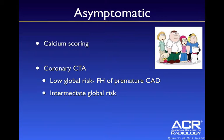What about the asymptomatic patient? Calcium scoring is always appropriate, and we're doing a fair number of these at our institution. With respect to coronary CTA, the patient either has to be low overall global risk with a family history of premature coronary artery disease, or they must be at intermediate global risk. Global risk category is determined using the ATP3 guidelines.